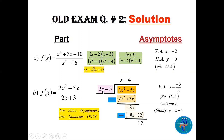For part (b), the numerator degree is higher, so we use long division: (2x² - 5x) divided by (2x + 3). Dividing 2x² by 2x gives x; x times (2x + 3) = 2x² + 3x; change sign to subtract, leaving -8x. Then -8x divided by 2x is -4, with remainder 12. We only need the quotient, so the slant (oblique) asymptote is y = x - 4. The vertical asymptote is x = -3/2, and there is no horizontal asymptote.